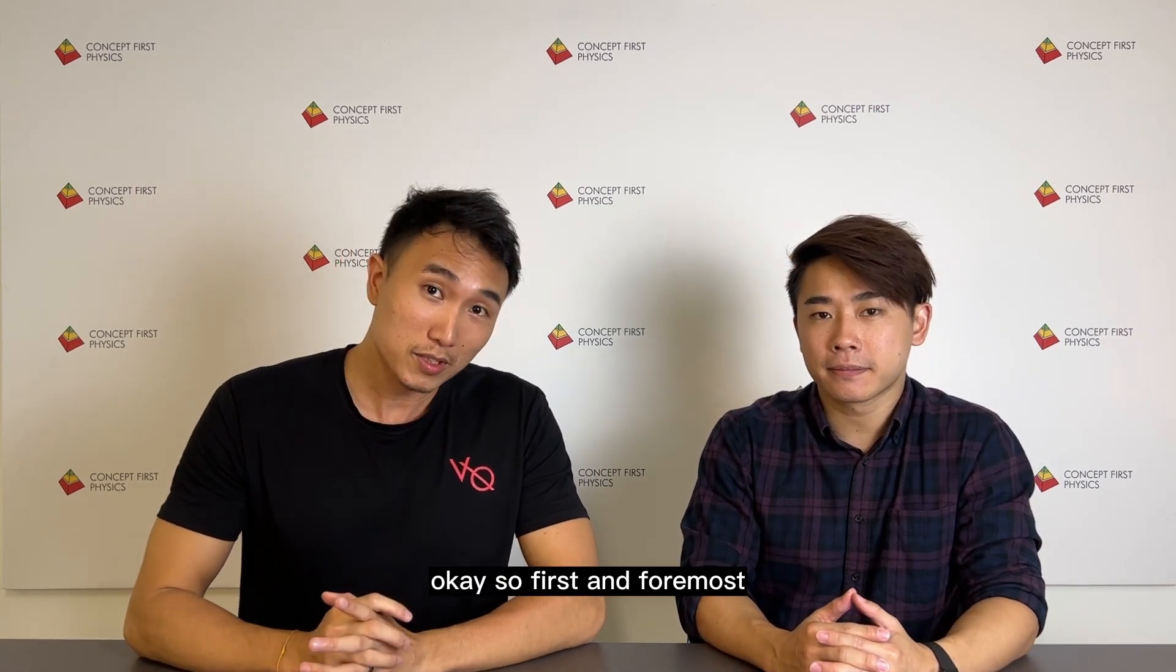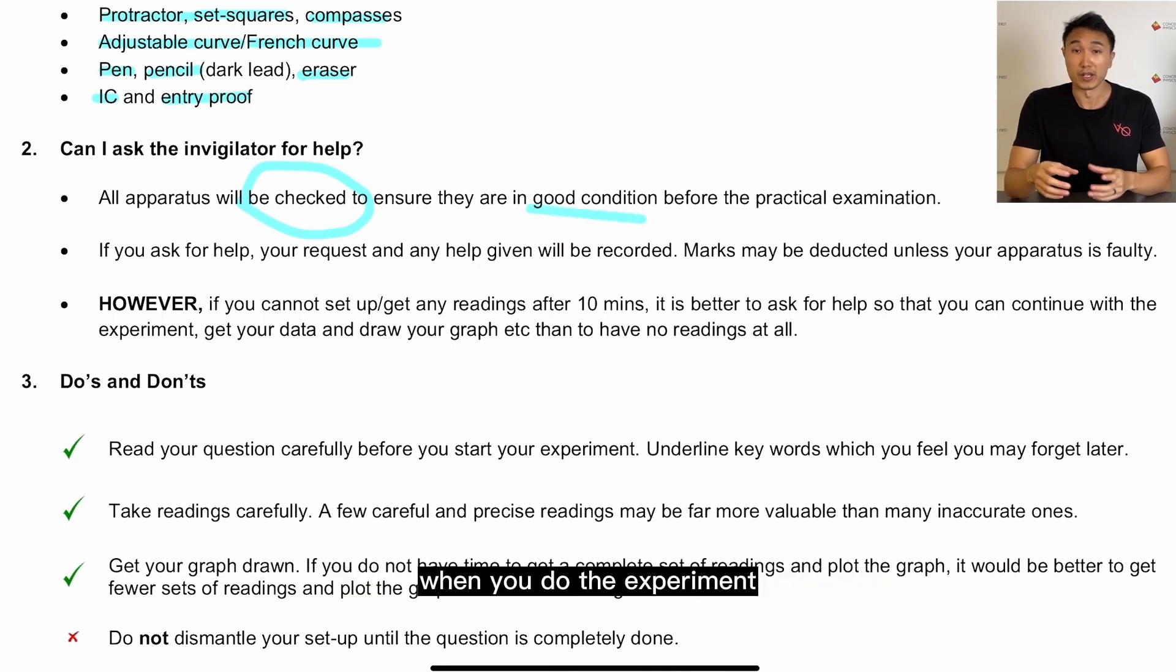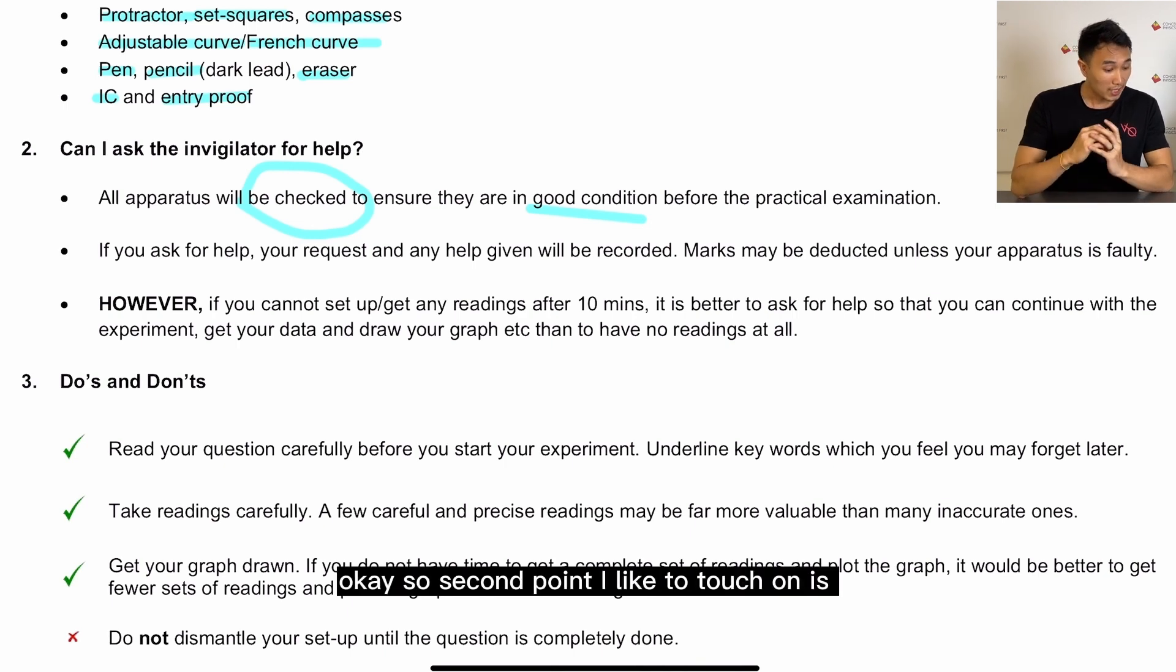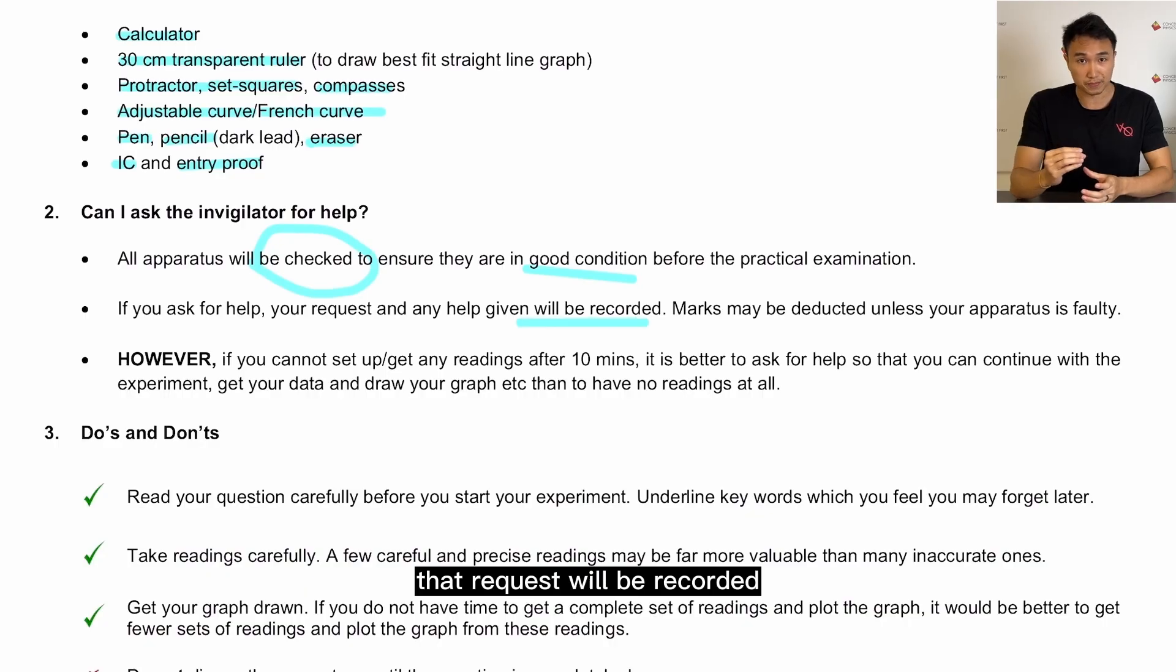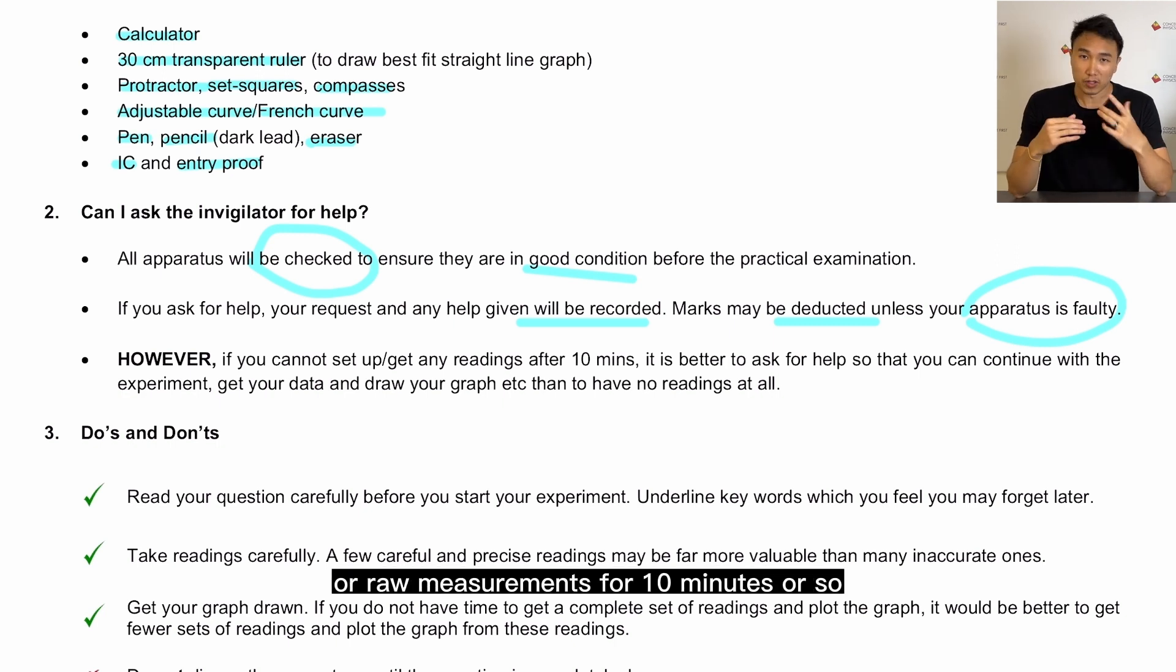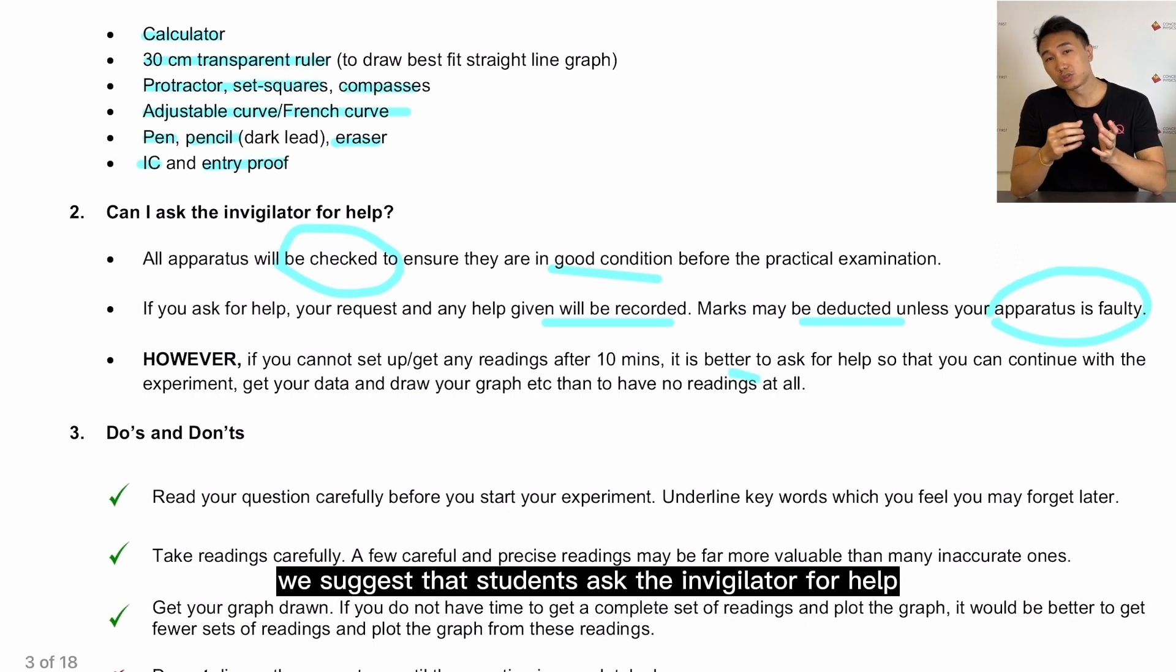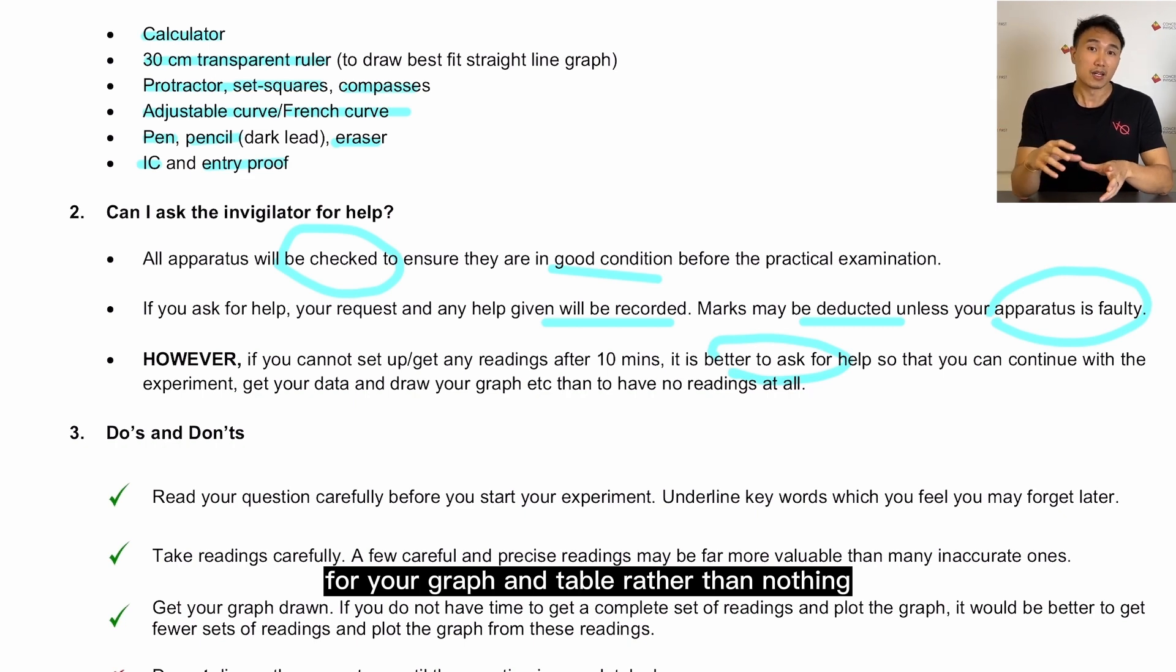Okay, so first and foremost, the apparatus you must always check whether it is faulty or not when you do the experiment. So in the event that it is faulty you must report it. Okay, so second point I want to touch on is, if you ask the invigilator for help, that request will be recorded and marks will be deducted unless your equipment is faulty. However, if you are unable to get data sets or raw measurements for 10 minutes or so, we suggest that students ask the invigilator for help because it is better to get some points and some marks for your graph and table rather than nothing.